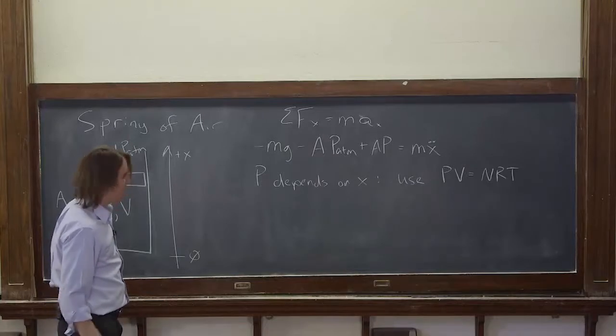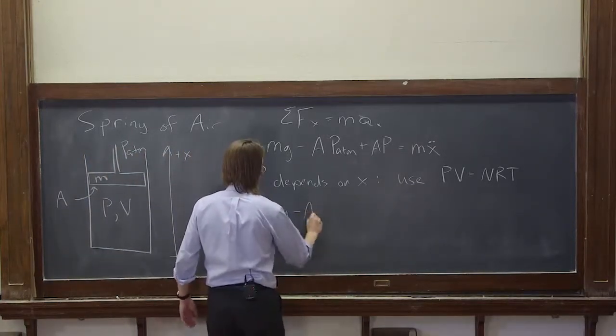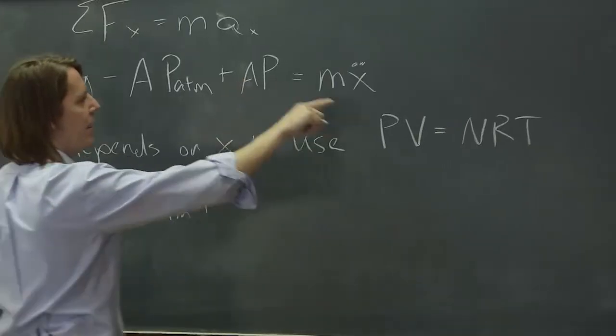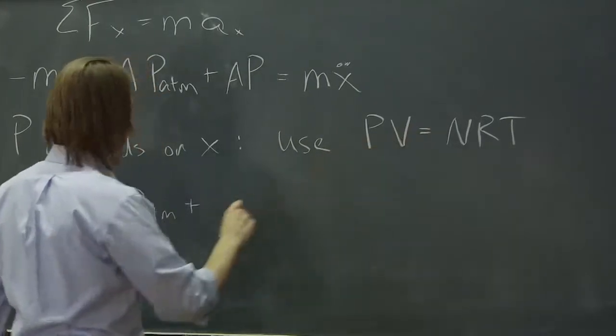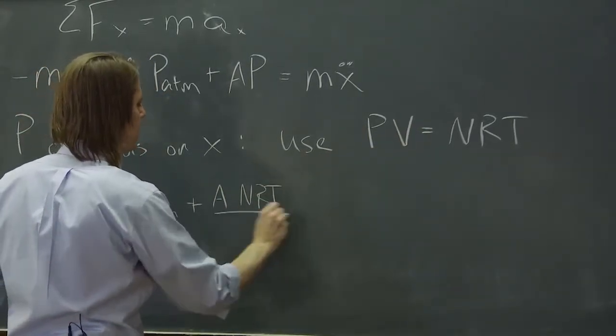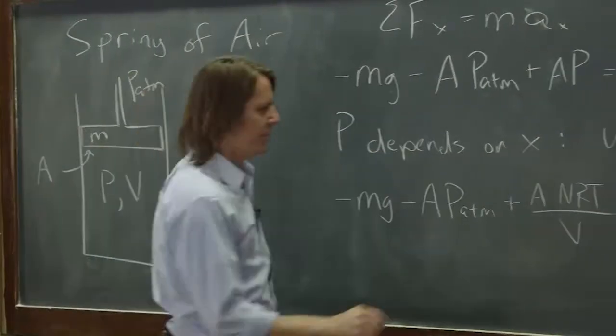So we could start plugging in. This is minus mg minus A times atmospheric pressure plus the area times P. Well, P is nRT over V, so A times nRT over V equals m x double dot.